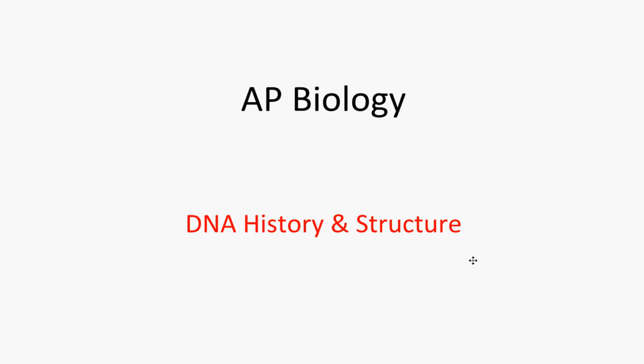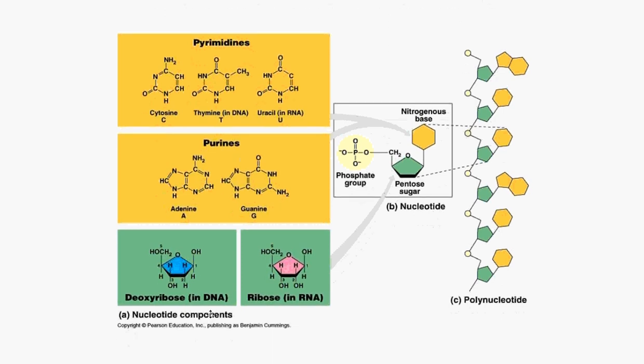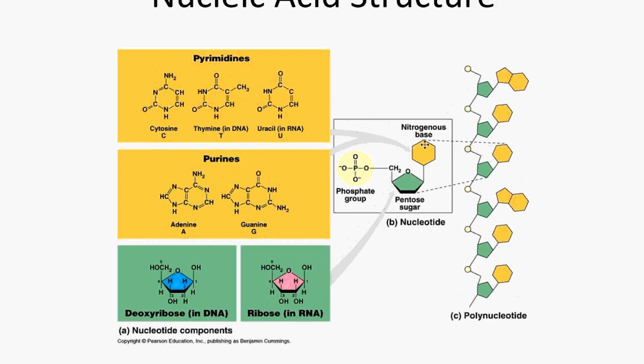This is the genetics unit and we'll be working through the different topics in that unit, beginning first with the history of DNA and its structure. The structure of DNA will largely be reviewed for us. DNA is a nucleic acid that is made up of three parts: a phosphate group, a pentose sugar or five-carbon sugar, and that sugar is deoxyribose in DNA.